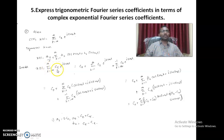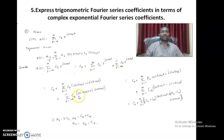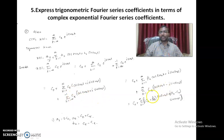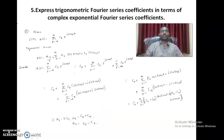x of t equals summation over k from minus infinity to infinity of c k e power jk omega naught t. I am splitting this summation for k equal to 0, positive values, and negative values. This gives c naught plus a sum from k equals 1 to infinity expanding e power jk omega naught t as cos k omega naught t plus j sin k omega naught t, and for negative indices. Rewriting with k replaced by minus k and combining the two summations, we can compare to find: a naught equals 2 c naught, ak equals c k plus c minus k, and bk equals c k minus c minus k. This concludes the objective questions; let us move to the descriptive questions.